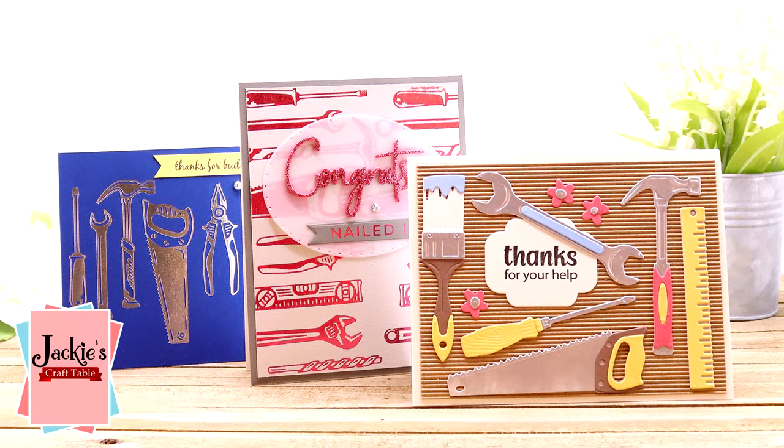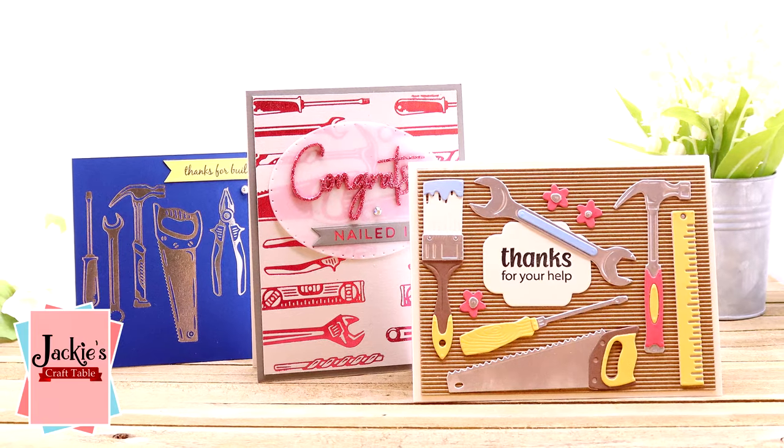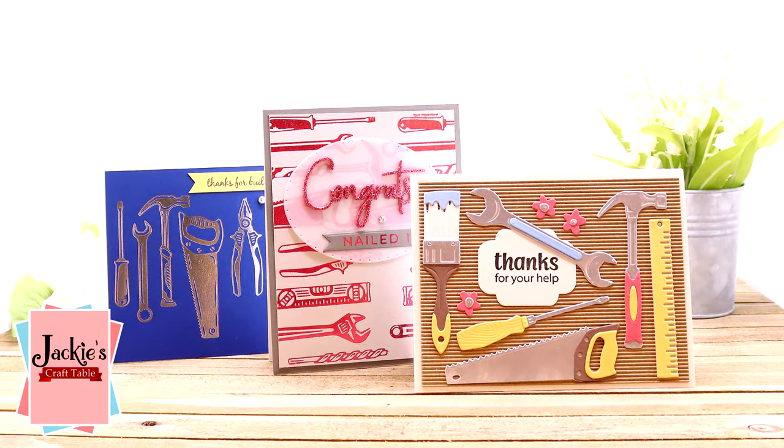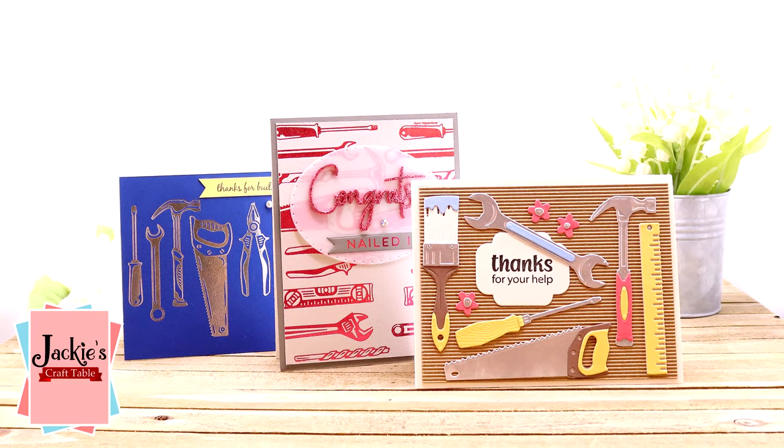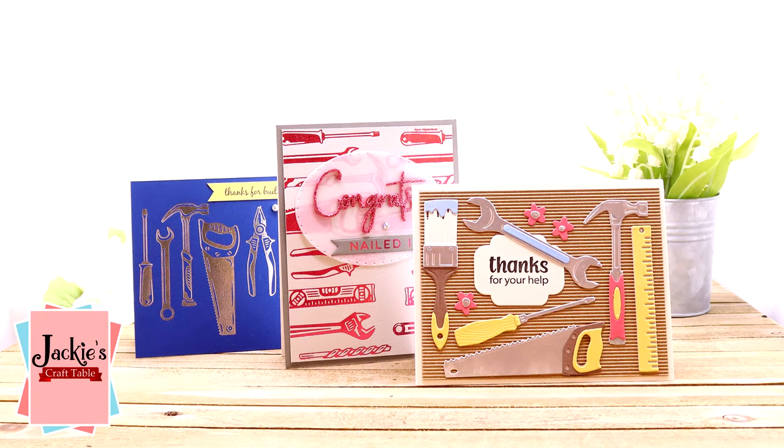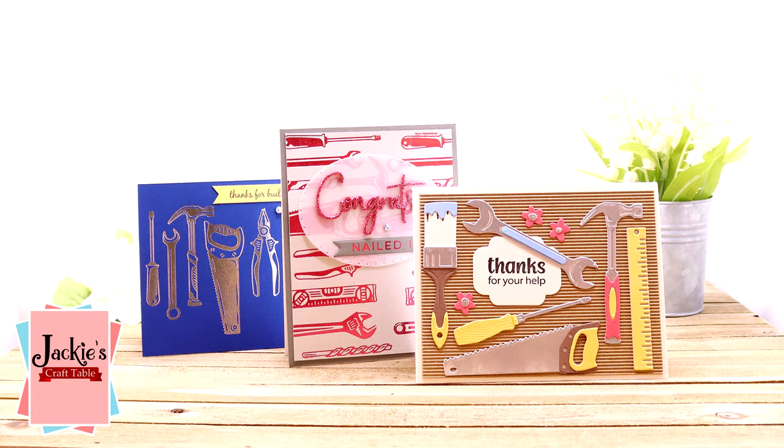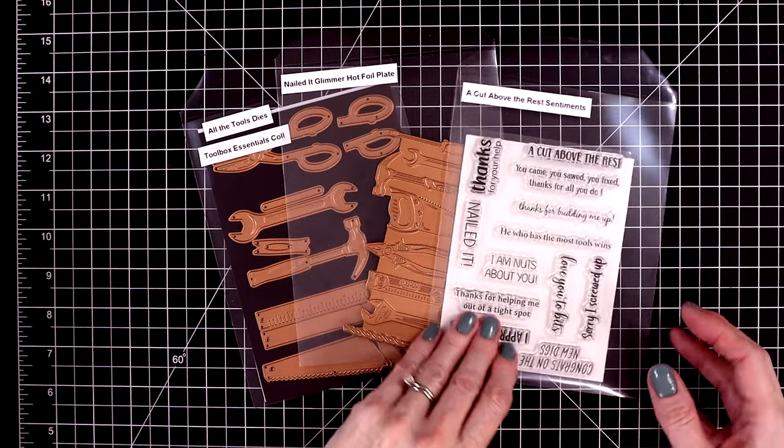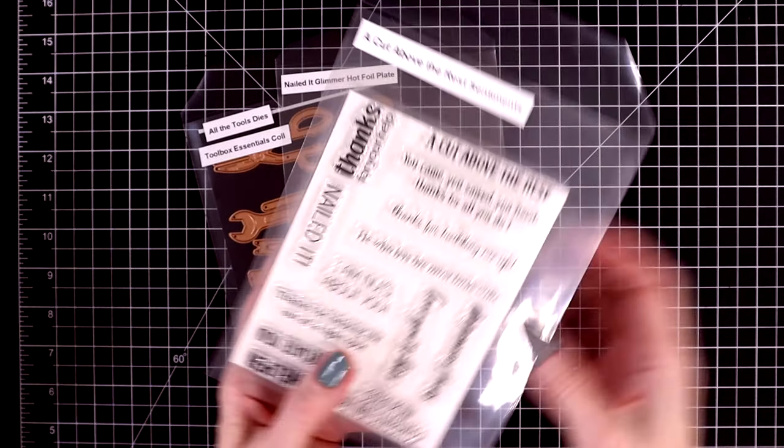Hello my crafty friends, welcome! Thanks for joining me. In today's video we're going to be doing a little die cutting, a little stamping, and a little glimmer hot foiling. I'll be creating three cards using the toolbox essential collection from Nancy McCabe and Spellbinders. So let me show you these items before we get in with the projects.